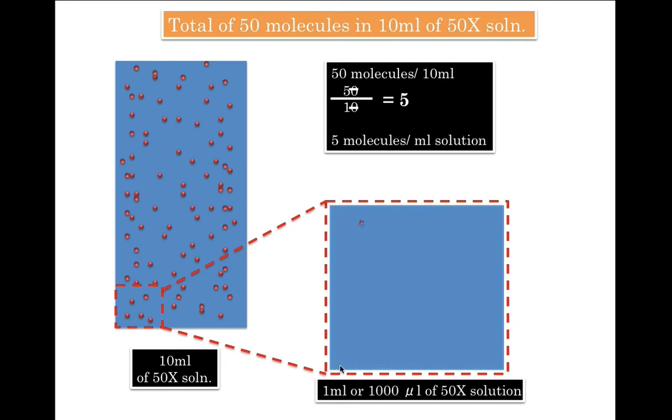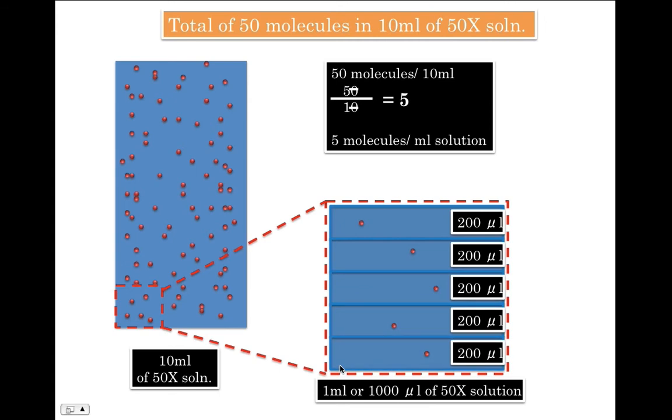Now 1 ml is equal to 1000 microliters which contains 5 molecules. And 1000 microliters can be divided into 5 equal parts of 200 microliters each. Assuming that we have a homogenous solution, there will be 1 molecule in every 200 microliters.